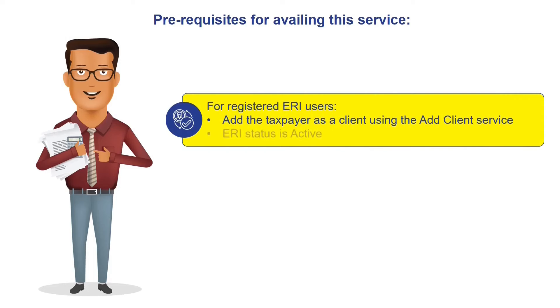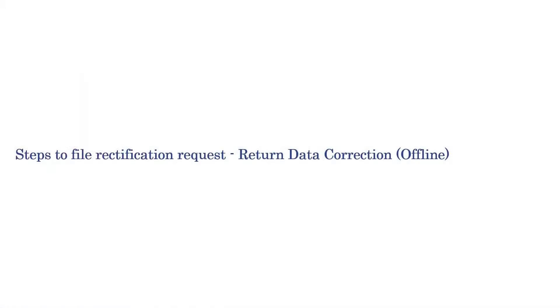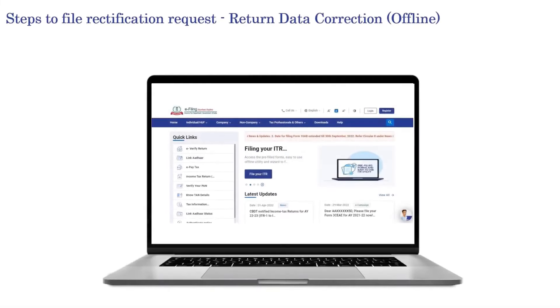There are three categories of rectification requests: rectification request for reprocess the return, rectification request for tax credit mismatch correction, and rectification request for return data correction in the offline mode. In this video, we would be talking about return data correction in the offline mode.